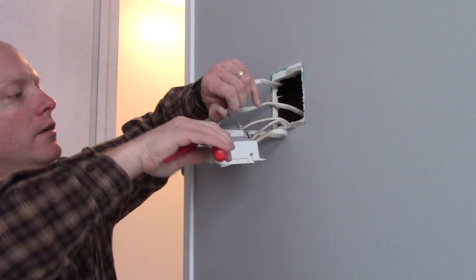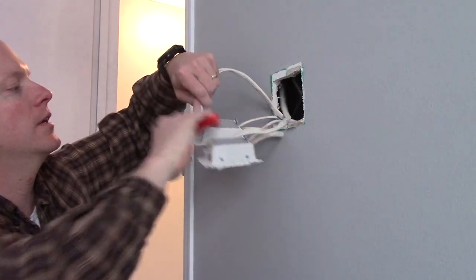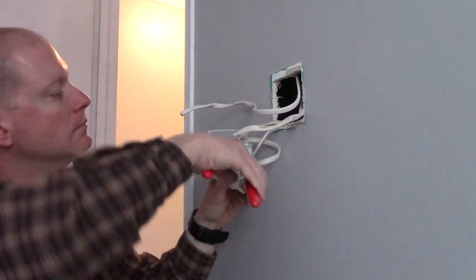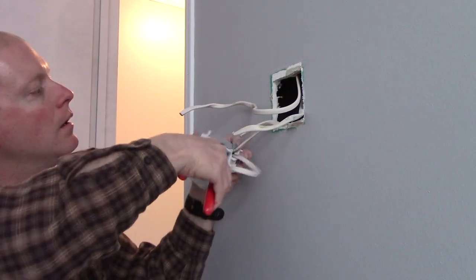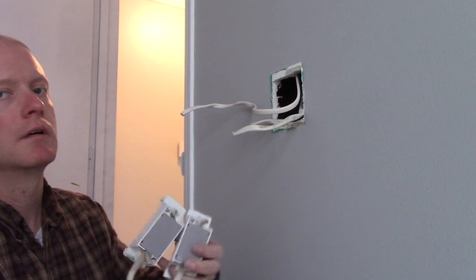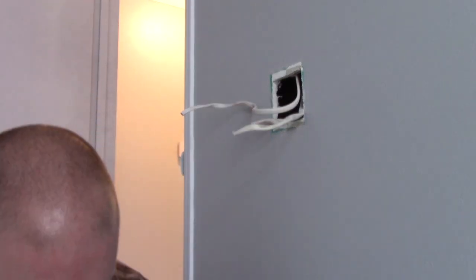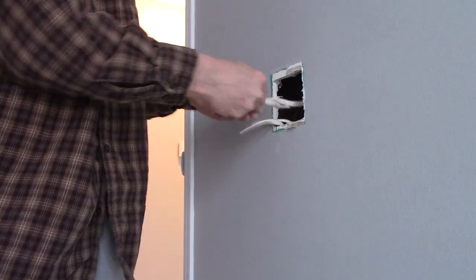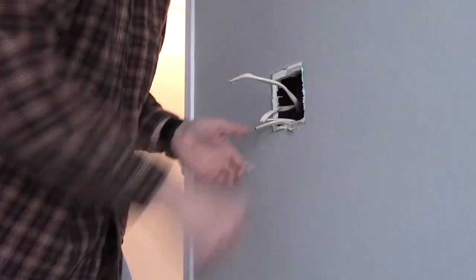So just cut the wires off, right as close to the fixture or the switch as you can. All right, now we've freed our old switch. Make sure you don't lose these in the wall, but I'm just going to kind of move them out of the way a little bit.